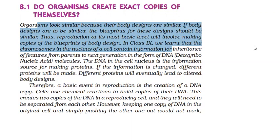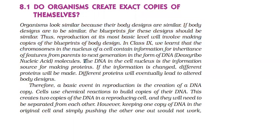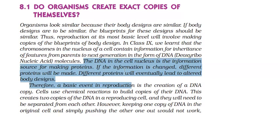The information is passed through genes. Chromosomes are found in the nucleus, and chromosomes contain DNA. DNA's full form is deoxyribonucleic acid. The DNA in the cell nucleus is the information source for making proteins. If the same information is used, the same proteins are made, leading to the same design. If the information changes, different proteins will be made, eventually leading to altered body design.